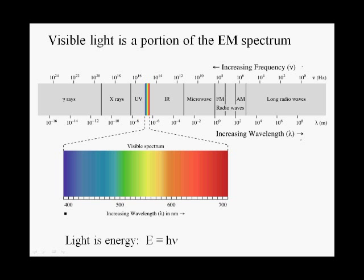Blue light has higher frequency and shorter wavelength. Red light has longer wavelength and lower frequency.